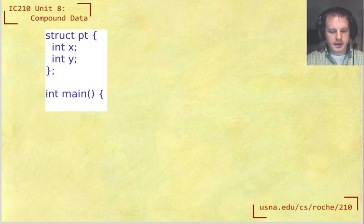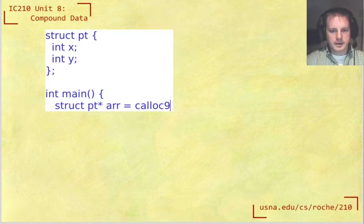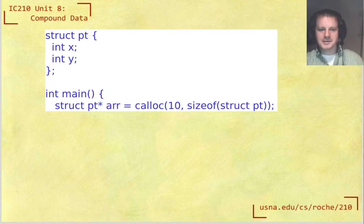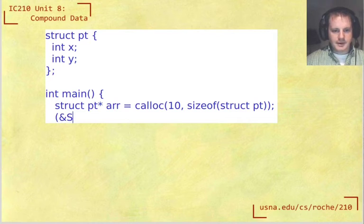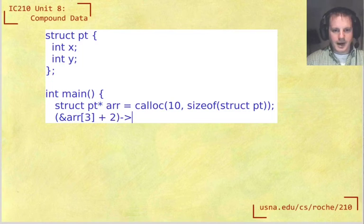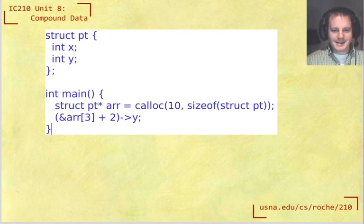And now let's say I have an array of points in my program. Then I want to think about a complicated operation: array index three, plus address of array index three plus two arrow y. Okay, so what the heck is that thing?